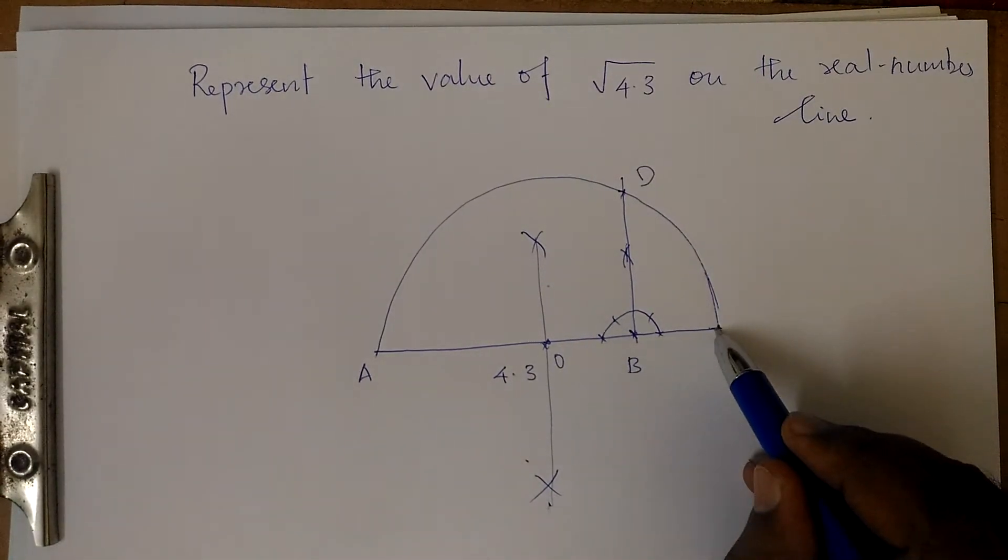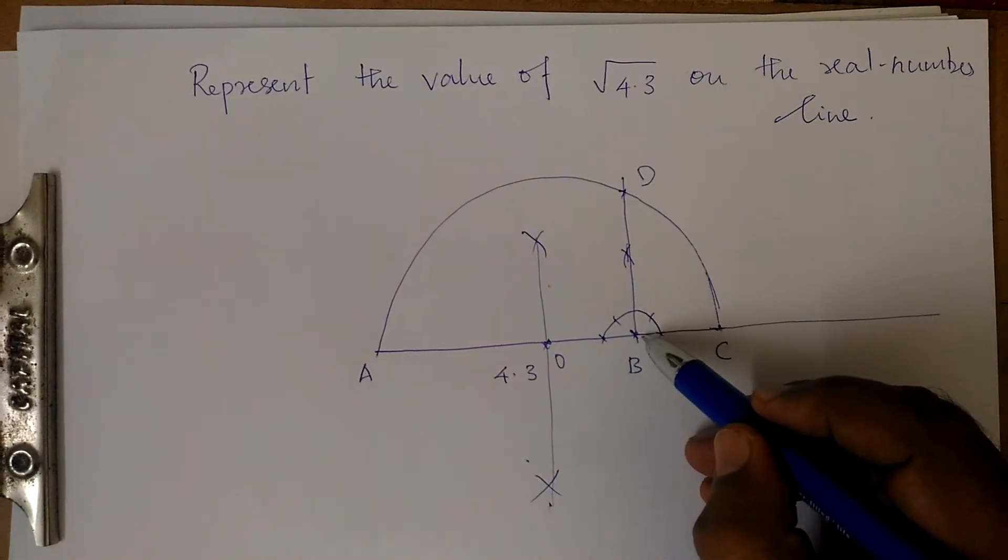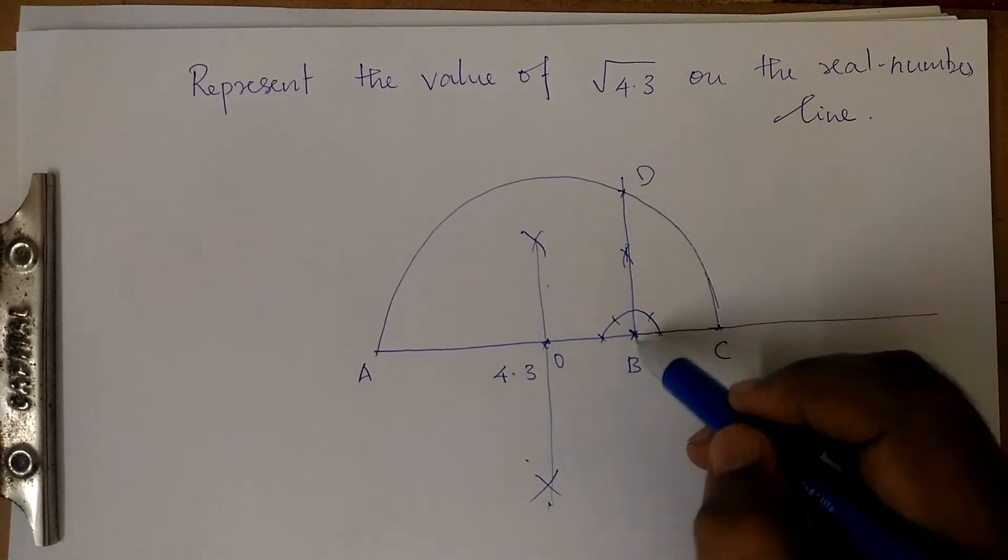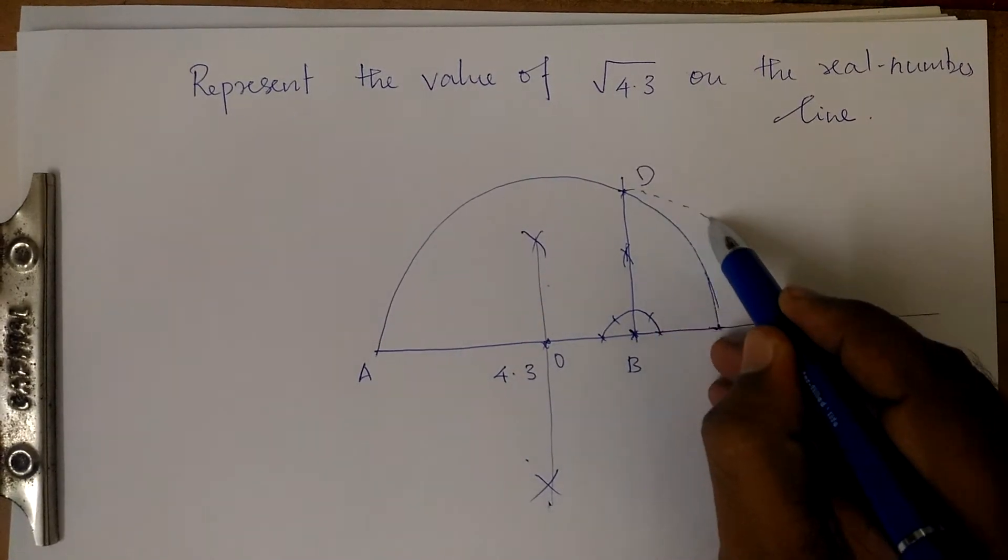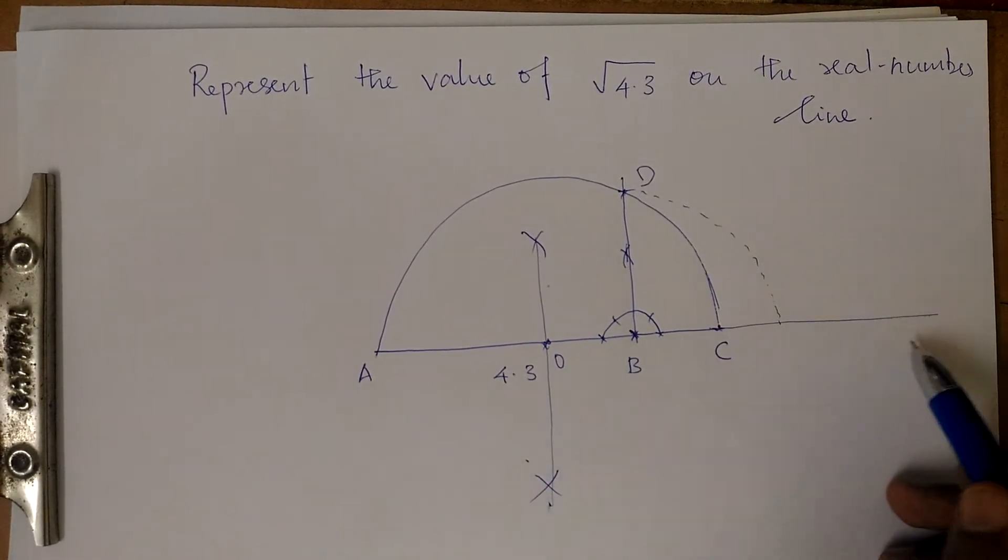Now extend this line further. With B as center and BD as radius, draw an arc such that it cuts line AC at point E.